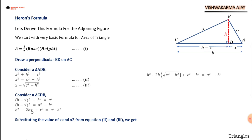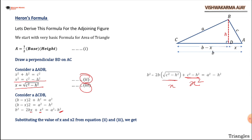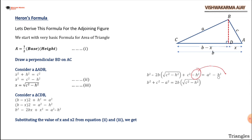We are going to substitute the values of x and x squared from equations 2 and 3. Substituting: b squared minus 2b times under root of (c squared minus h squared) plus (c squared minus h squared) equals a squared minus h squared. The h squared terms cancel, leaving b squared plus c squared minus a squared equals 2b times under root of (c squared minus h squared).